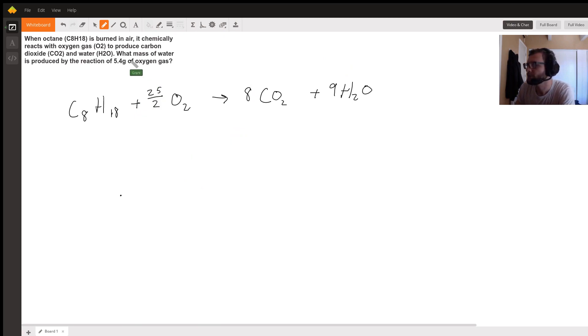The second part of the equation says what mass of water is produced by the reaction of 5.4 grams of oxygen gas. So we know we have 5.4 grams of oxygen.